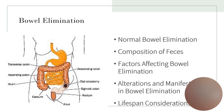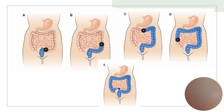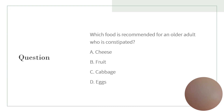To maintain healthy bowel habits, eat a healthy diet with fiber, modify any potential risk factors, and engage in screenings. This slide shows placement of different ostomies: A is a sigmoid ostomy, B is a descending ostomy, C is a transverse ostomy, D is ascending, and E is an ileostomy. Which food is recommended for an older adult who is constipated? That would be fruit.